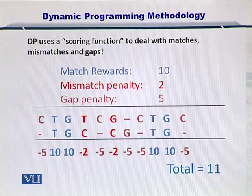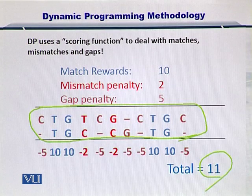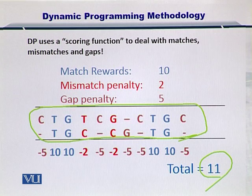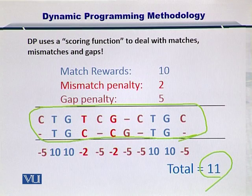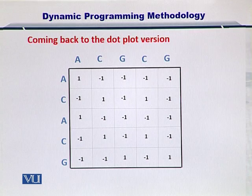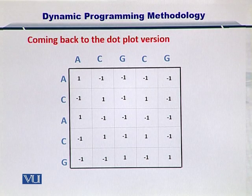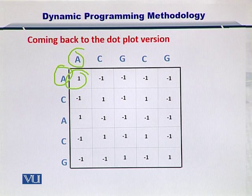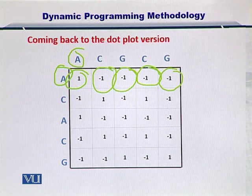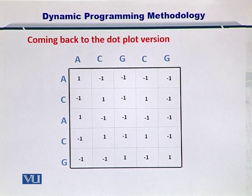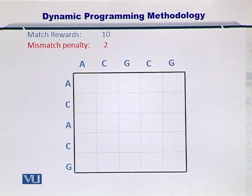The total score for this alignment is 11. Of course, if you vary the alignment the score will be different. In pairwise sequence alignment you create all possible combinations of alignments, score them, and select the alignment with the maximum total score. Coming back to dot plots — that is where dynamic programming will take its route. Nucleotides that match have a positive score, mismatches a negative score, and we fill the entire matrix accordingly. The first thing you need to do is remove the binary dots and instead consider the rewards and penalties.